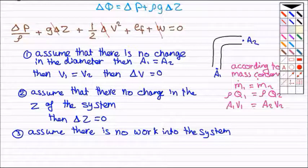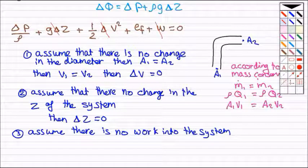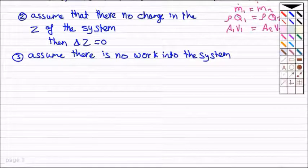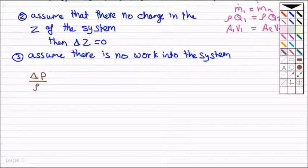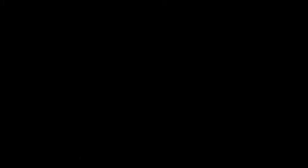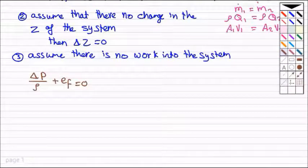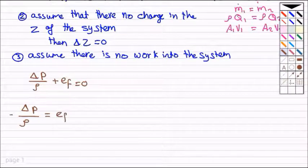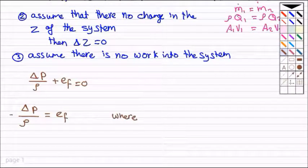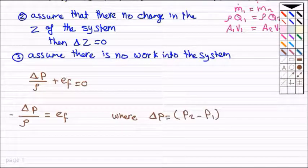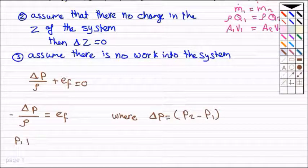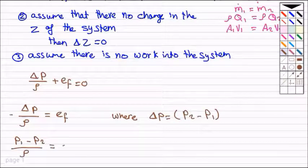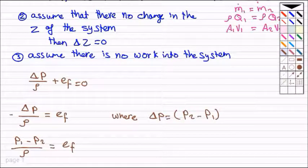Now we can write the Bernoulli equation in this way: delta p divided by rho plus ef equal to zero. So delta p divided by rho, minus delta p equal to ef, where delta p equal to p2 minus p1. So if we put p1 minus p2 divided by rho, it's equal to ef.